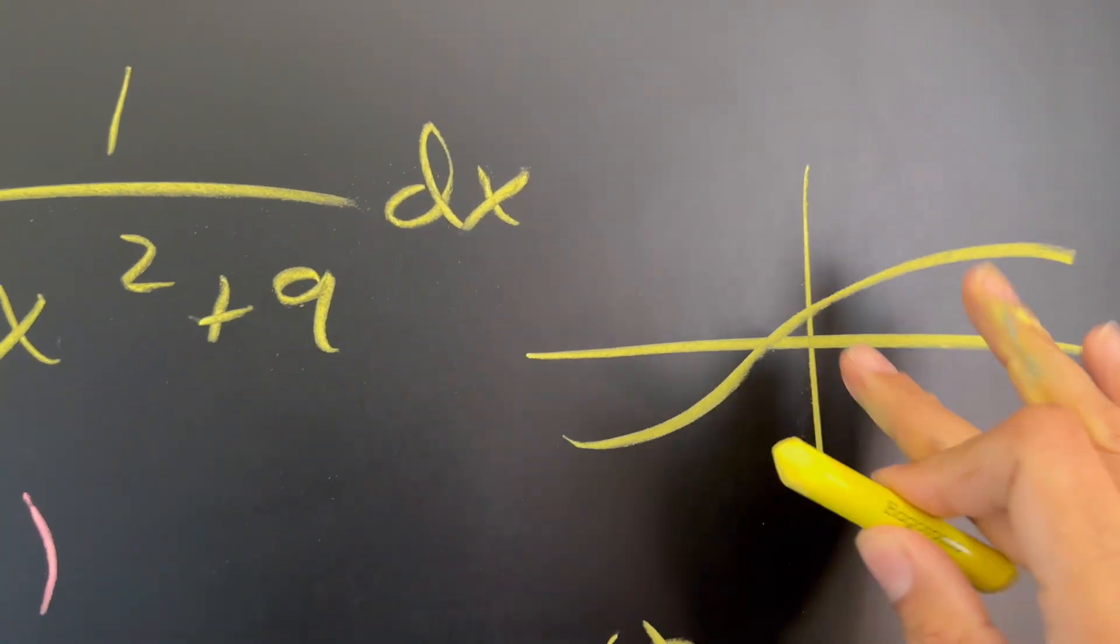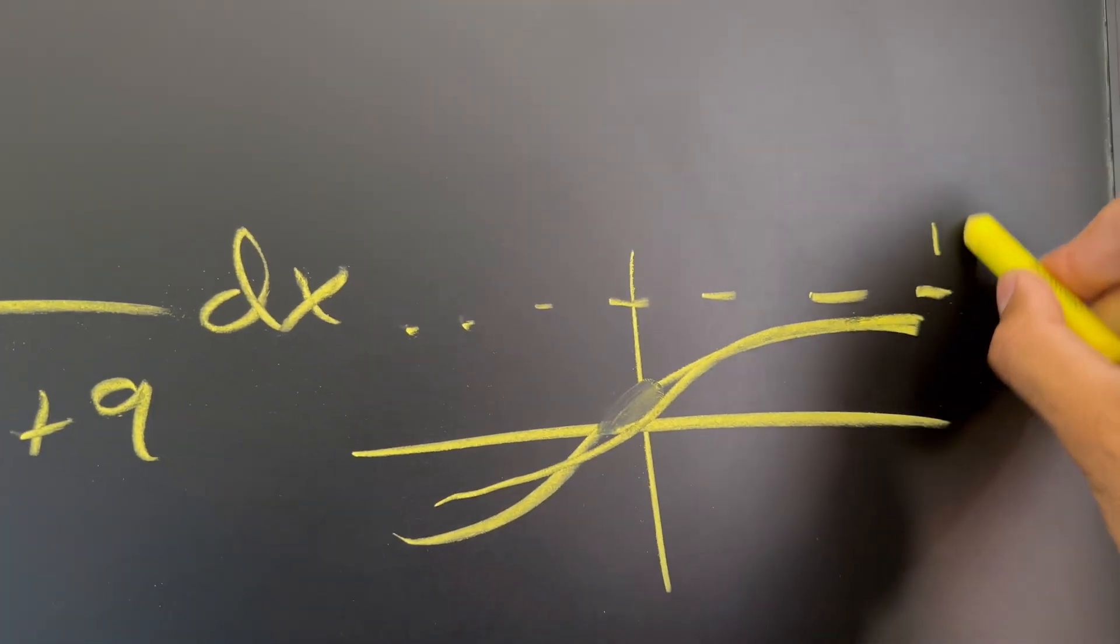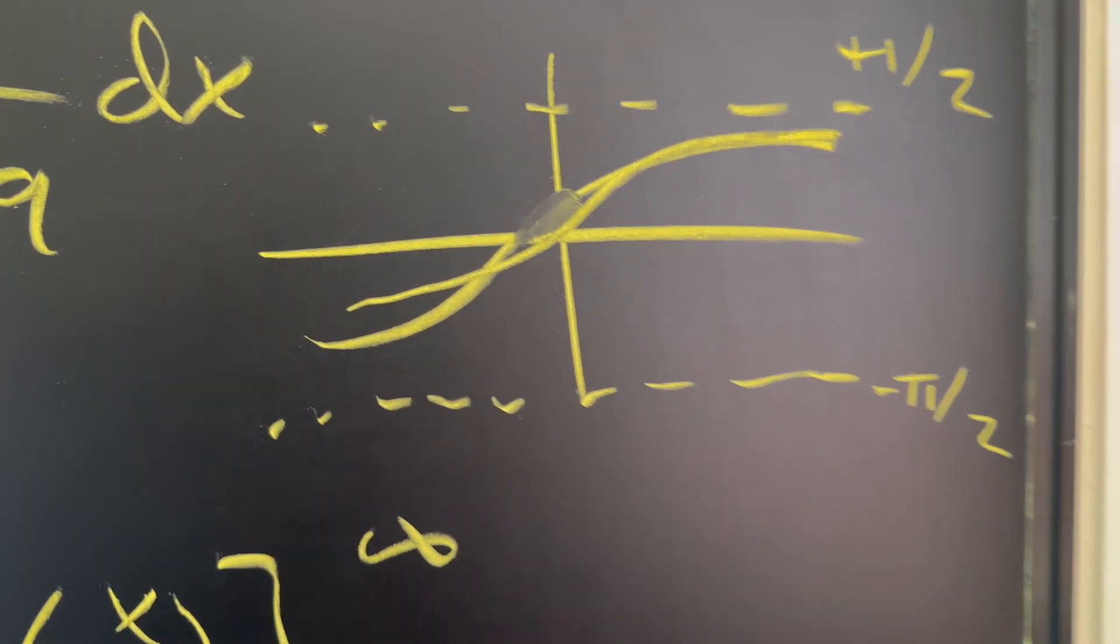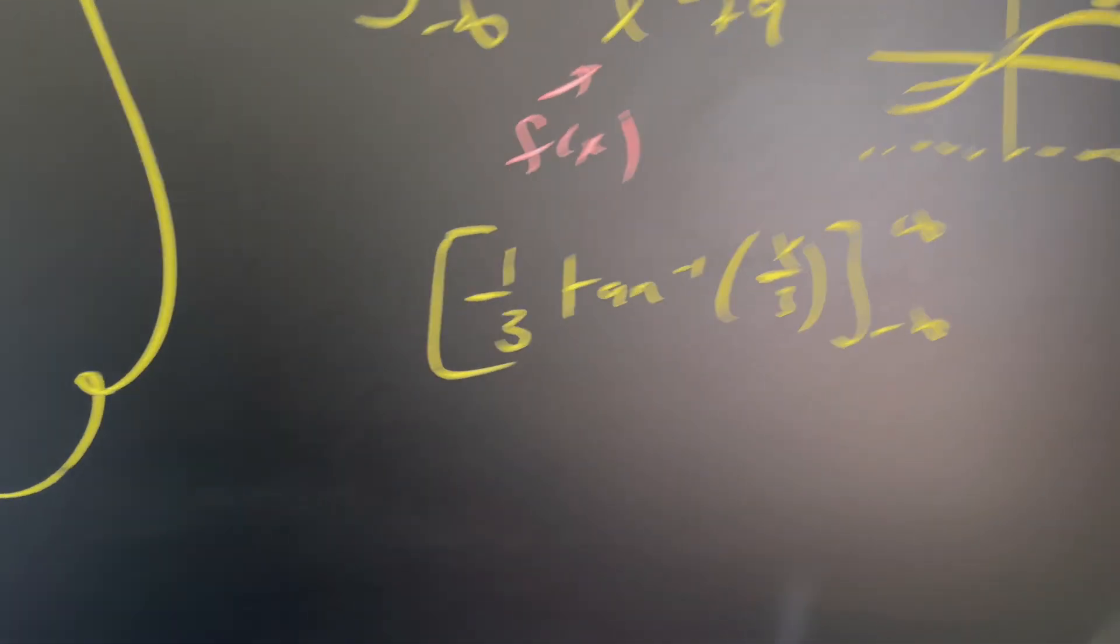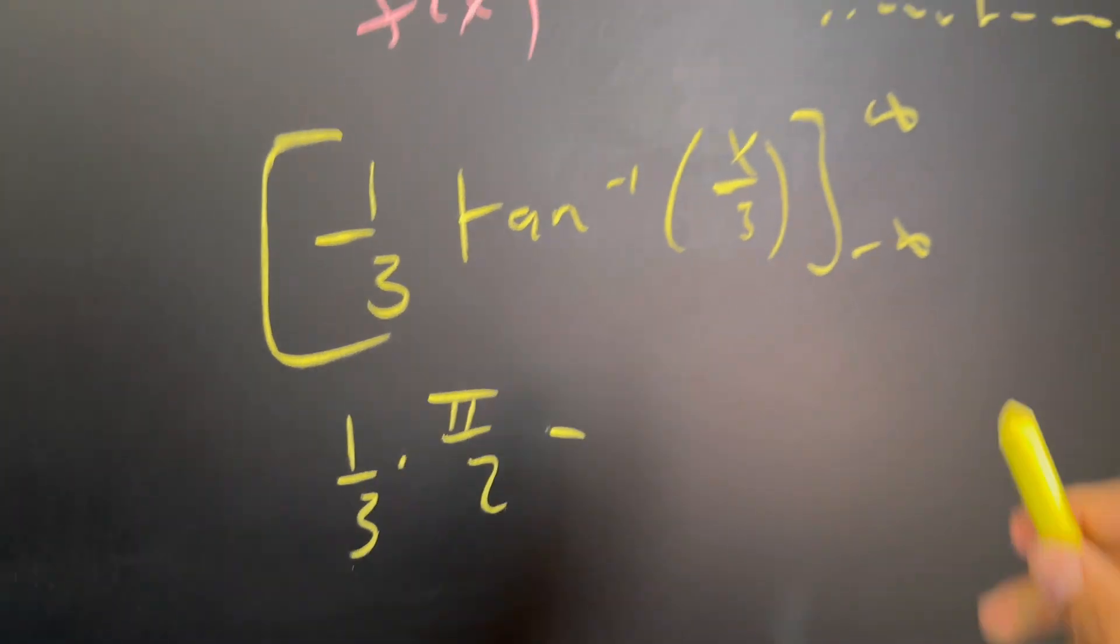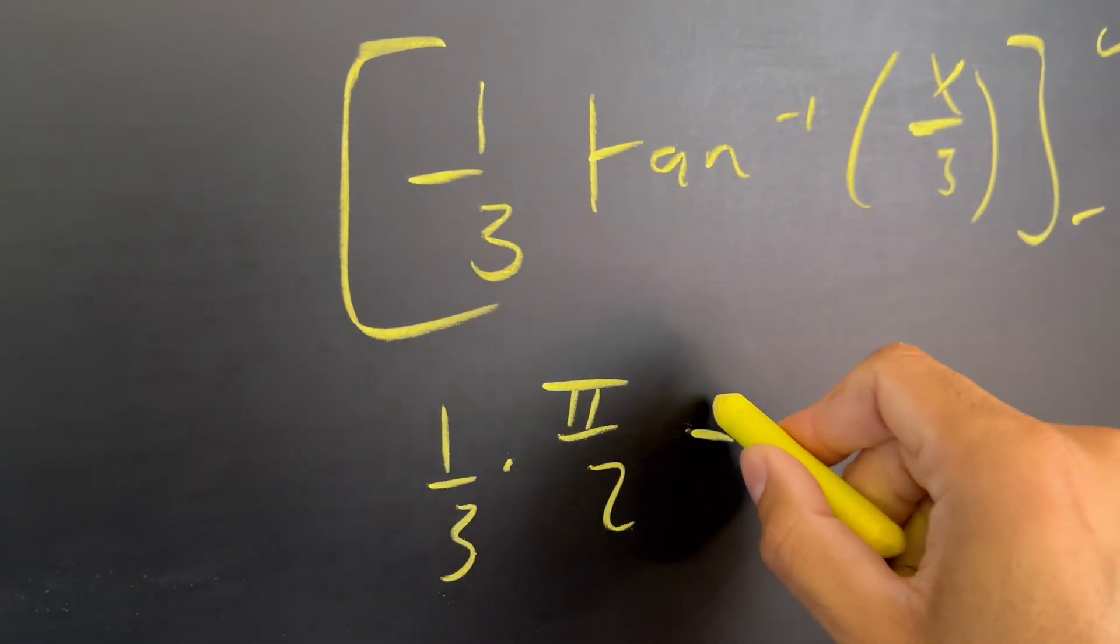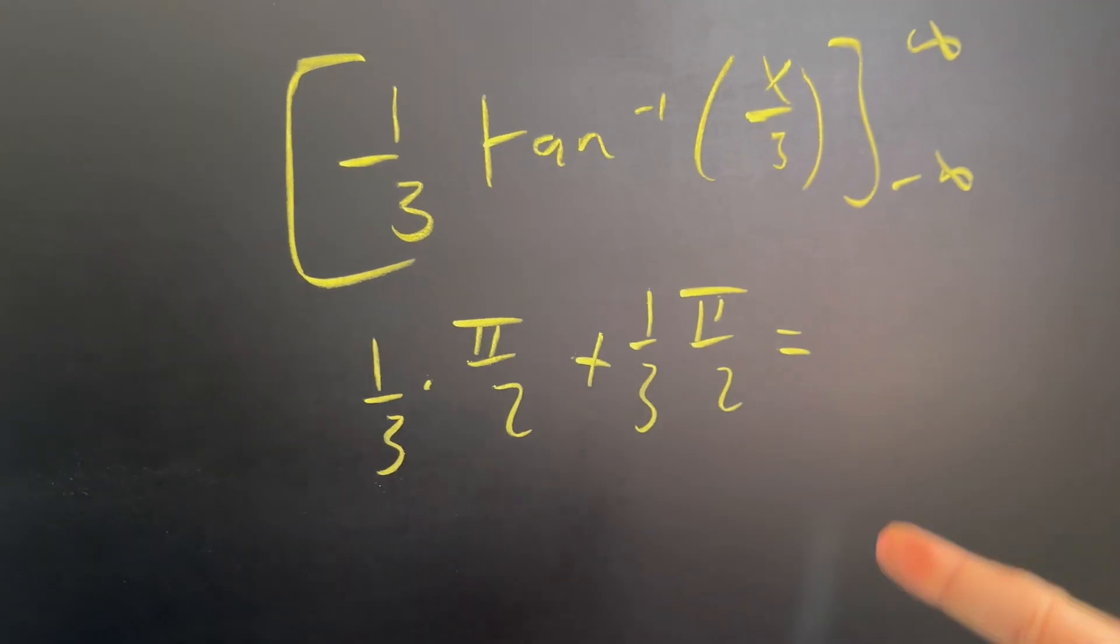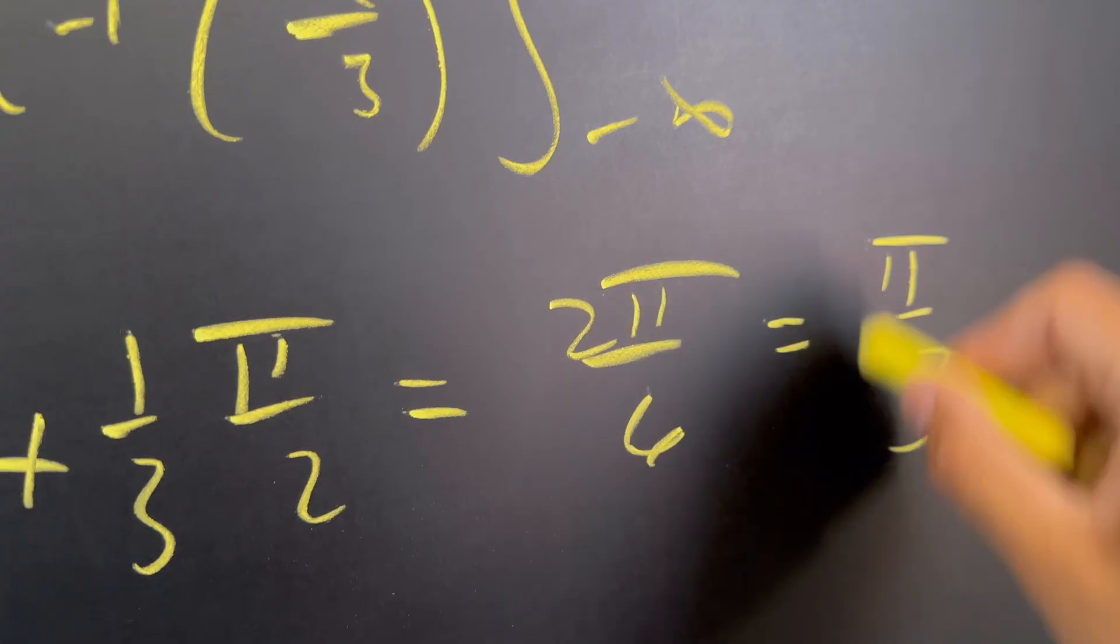Now arctangent behaves like this. It should really cross through the origin there. But it has a horizontal asymptote at pi over two and a horizontal asymptote down below at negative pi over two. So as we approach infinity, we're approaching pi over two. So this will be one third times pi over two minus, and then you're approaching negative infinity, and that's negative pi over two. Well, with the negative here, we also have a positive, we can combine these together, and you have pi over six plus pi over six, in other words, two pi over six, and simplify this to pi over three.